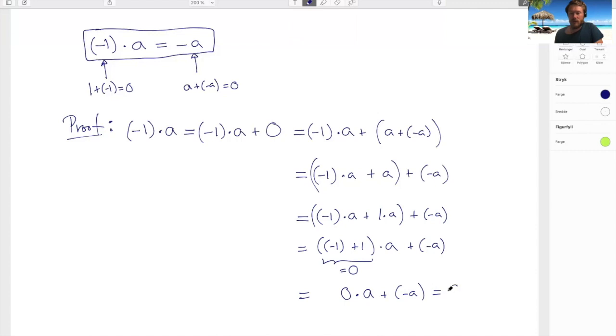So here I have zero plus minus a. Well, adding zero to something, you can just take the zero away. And there's my proof.